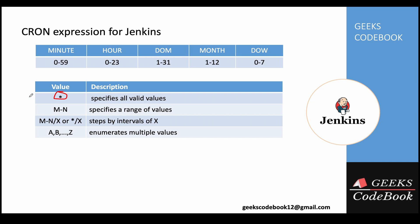You can define a range as well. Using m hyphen n means starting from one number to another. For example, 2 hyphen 5 means a range of 2 to 5, and it's inclusive — it will not go beyond 5.